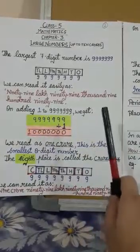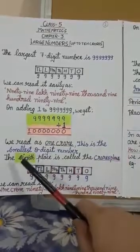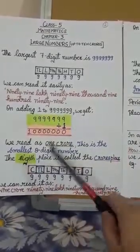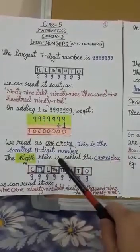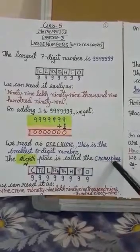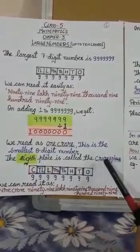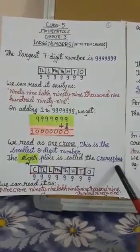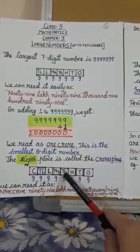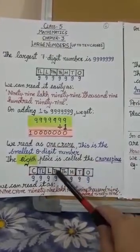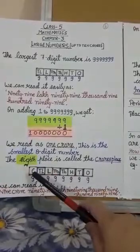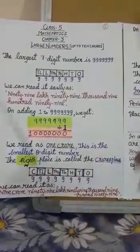The smallest eight-digit number is one crore. The eighth place in the place value chart is called the crores place. So the places are: ones, tens, hundreds, thousands, ten thousands, lakhs, ten lakhs, and the eighth place — crores.